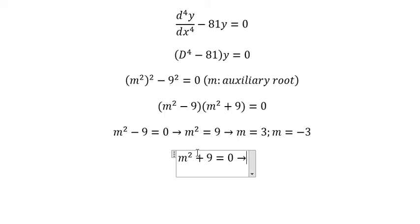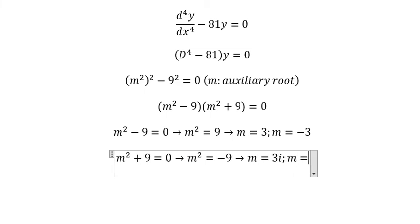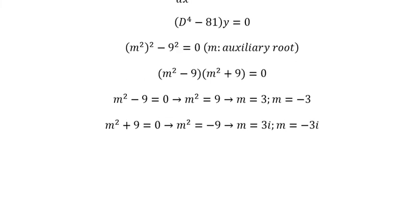m squared plus 9 equals to zero, so m squared equals to negative 9, so m equals to 3i and m equals to negative 3i. So we got the final answer.